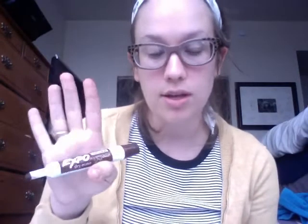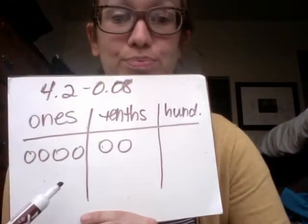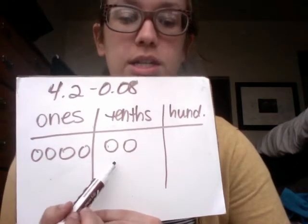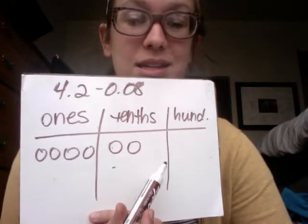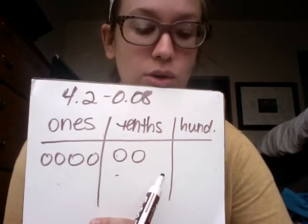First things first. Up at the top of the page, it has subtract 8 hundredths from 4.2. So 4 whole and 2 tenths — that's going to be the bigger number. 8 hundredths. I'm going to draw out a chart for us: ones, tenths, and hundredths. I've drawn out my 4.2 — I have four ones and two tenths. I've got nothing in my hundredths place, so that's going to be a problem. How can I subtract 8 hundredths if I don't have any hundredths at all? So I'm going to have to rename something.